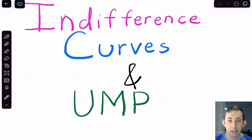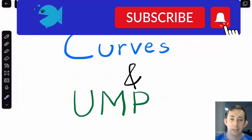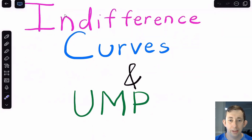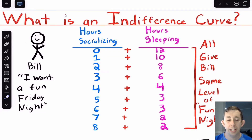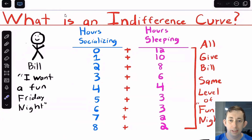Hi guys, welcome back to In Case of Econ Struggles. Welcome to another micro struggle. Today I'm going to do a really quick video specifically on indifference curves — what they are, how to interpret them, and how they fit into the utility maximization problem. An indifference curve means all the points, or all the bundles of things, that give us the same level of utility — but what does that mean?